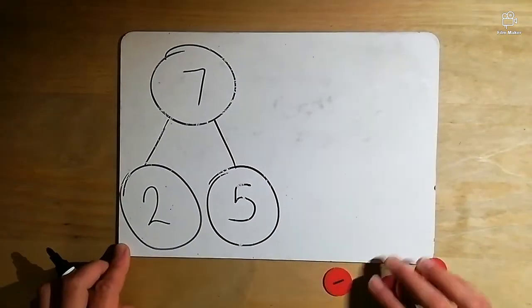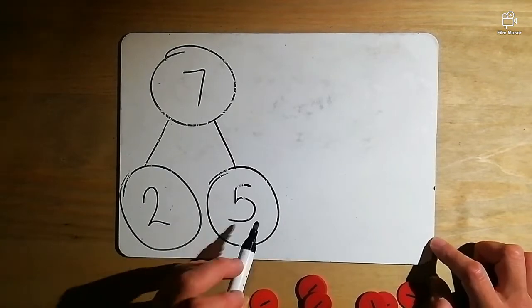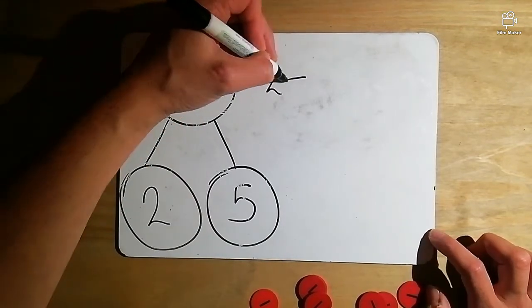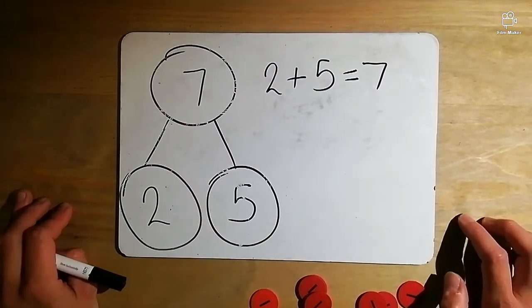So what number facts have we derived from this? What number facts have we found? Well we can see here two add five equals seven. Easy easy.